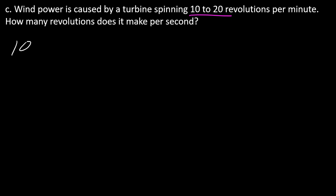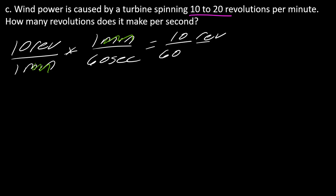If I start with the 10 revolutions per one minute, in one minute there are 60 seconds. Once again my minutes will drop out, so I'm left with 10 over 60 revolutions per second. It becomes one-sixth of a revolution per second.